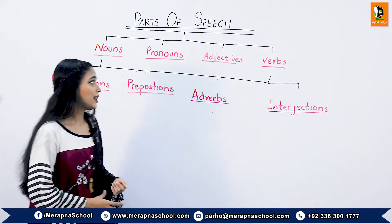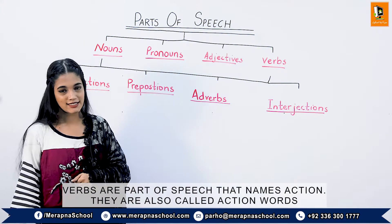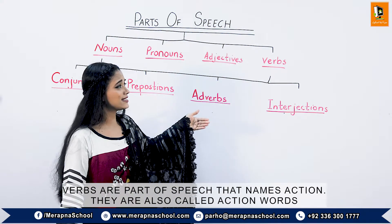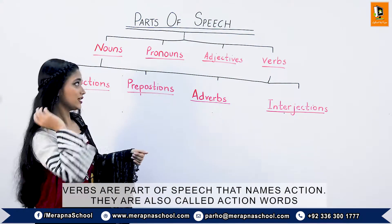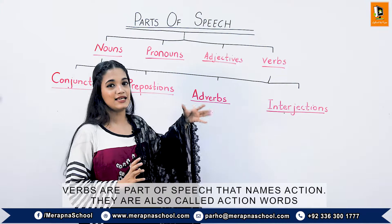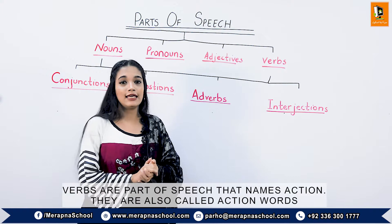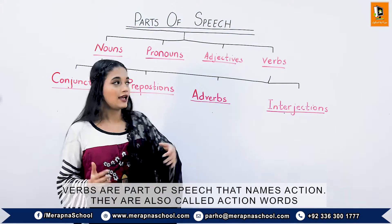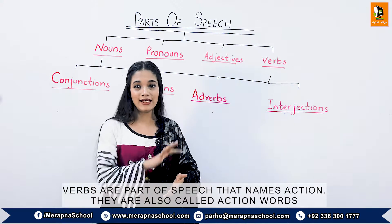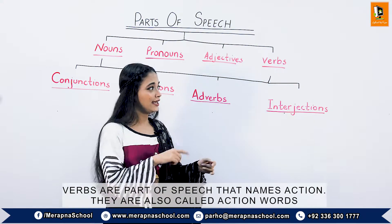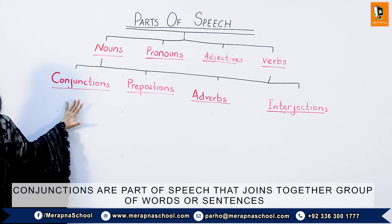Now moving on to verbs. Verbs are also known as action words, in the sense that they show the action of nouns. For example, in the sentence 'Ali is a good boy,' when he shows action in a sentence like 'He is playing,' the word 'playing' would be a verb. It is showing the relation with Ali, which is a noun.